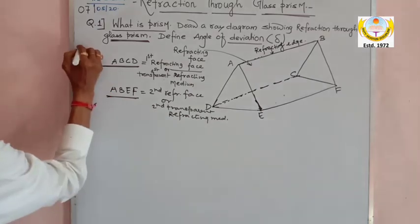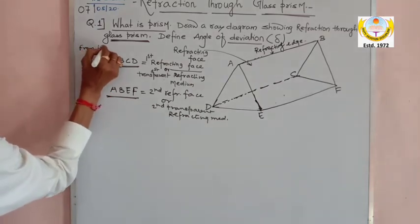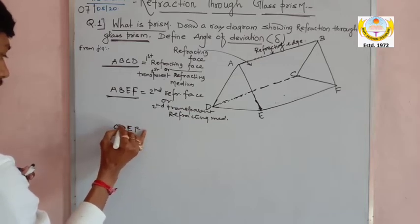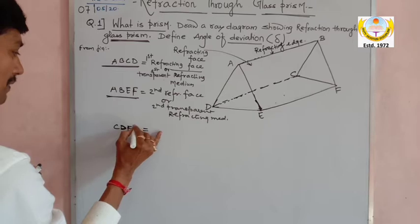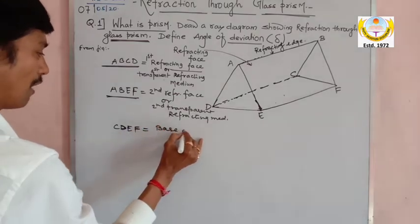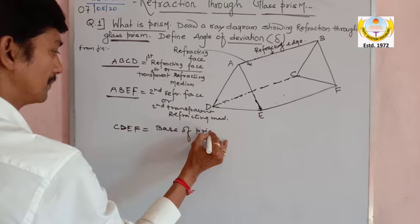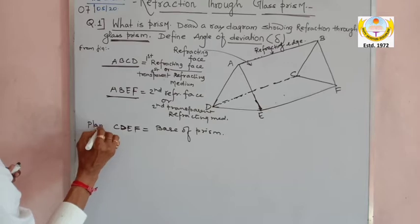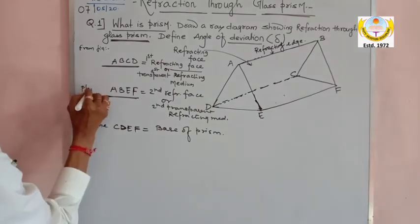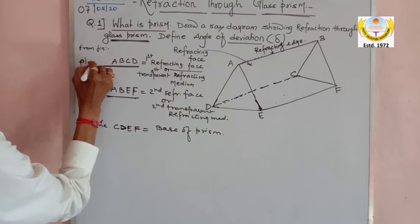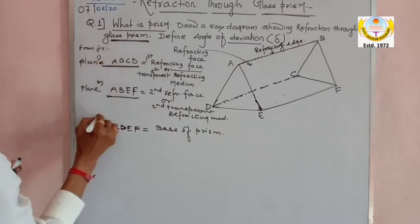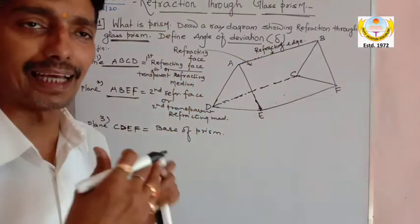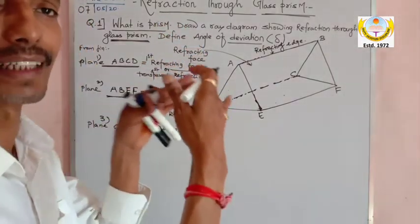In the figure you can see that CDEF is the base of the prism. So we have three very important components: the base of the prism (CDEF) and the two refracting faces (ABCD and ABEF). These are the crucial concepts about the structure of a prism.